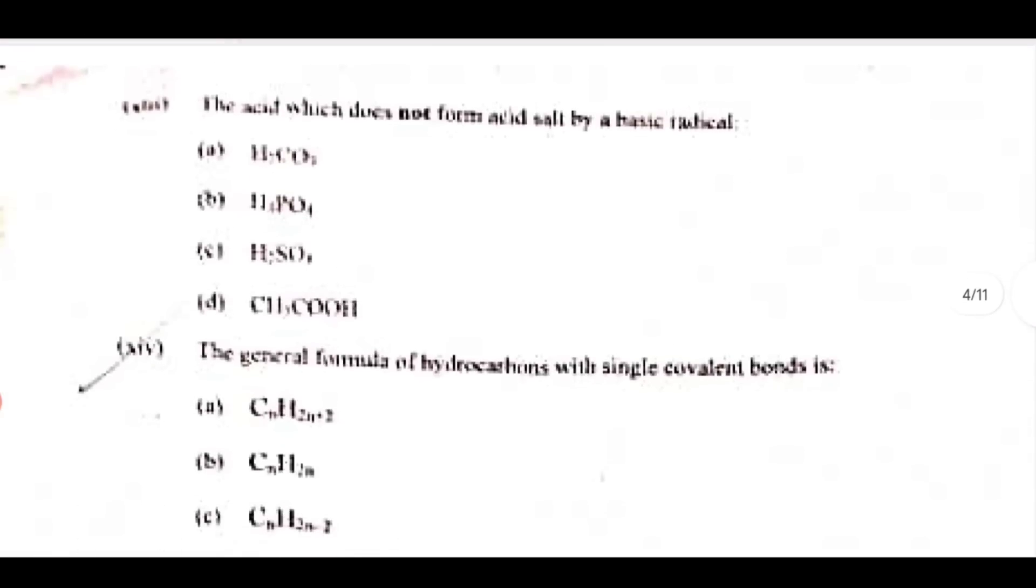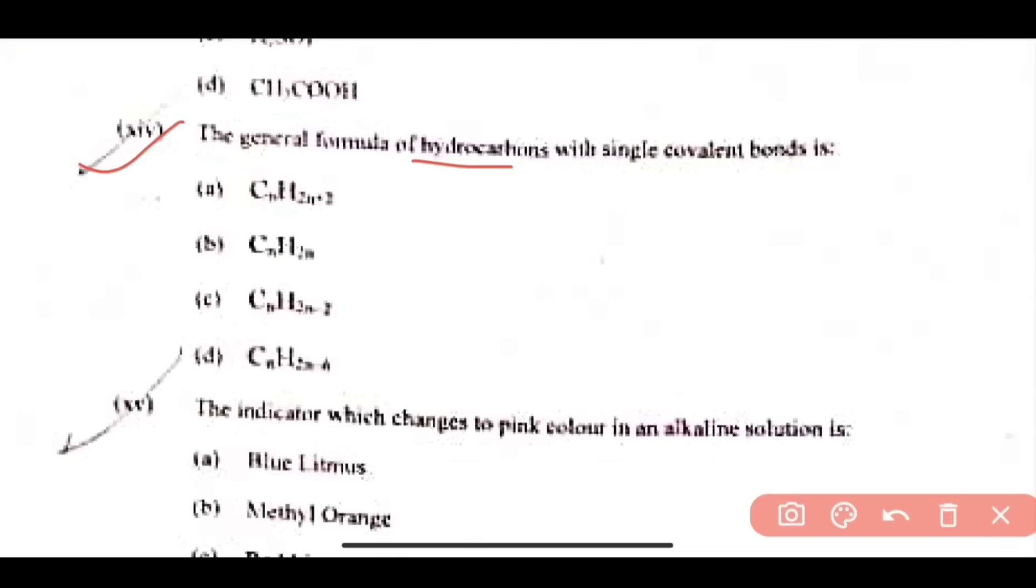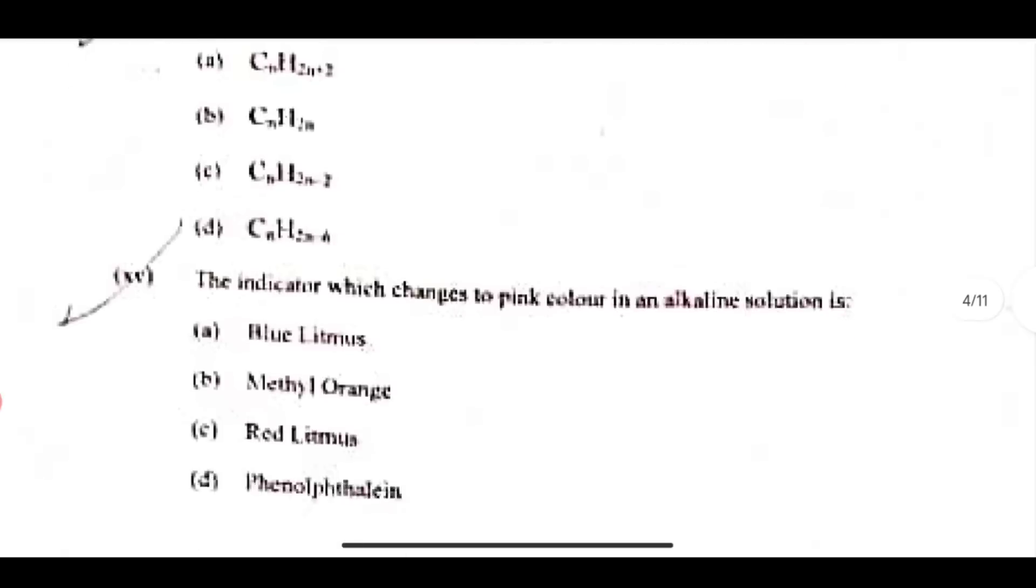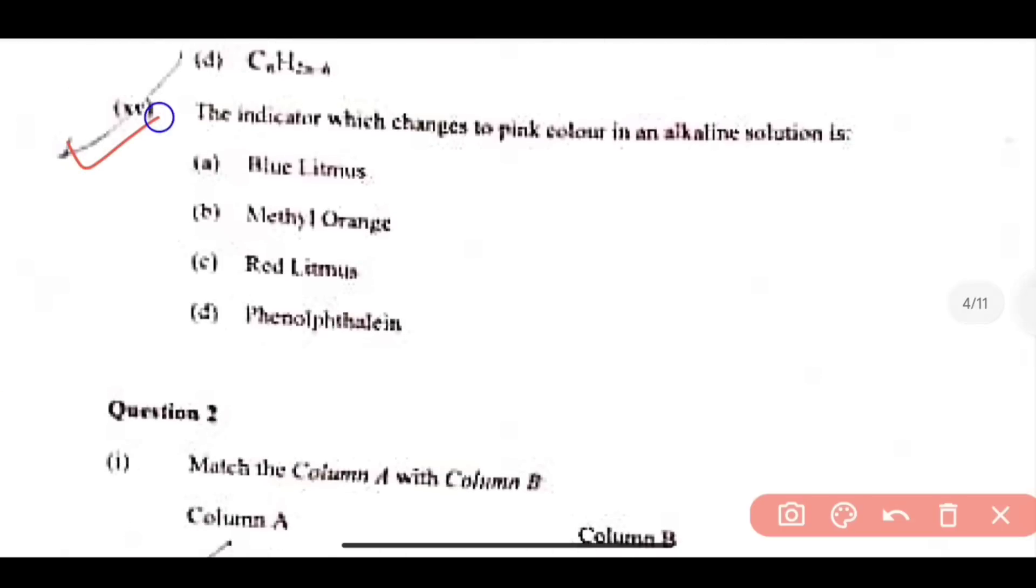Next, question number 13, CH3COOH. Next question number 14, the general formula of hydrocarbons with single covalent bond. So this will be option number A, CNH2N plus 2. Next question number 15, which will be last. Pink color, phenolphthalene, which we discussed yesterday, so option number D is correct.